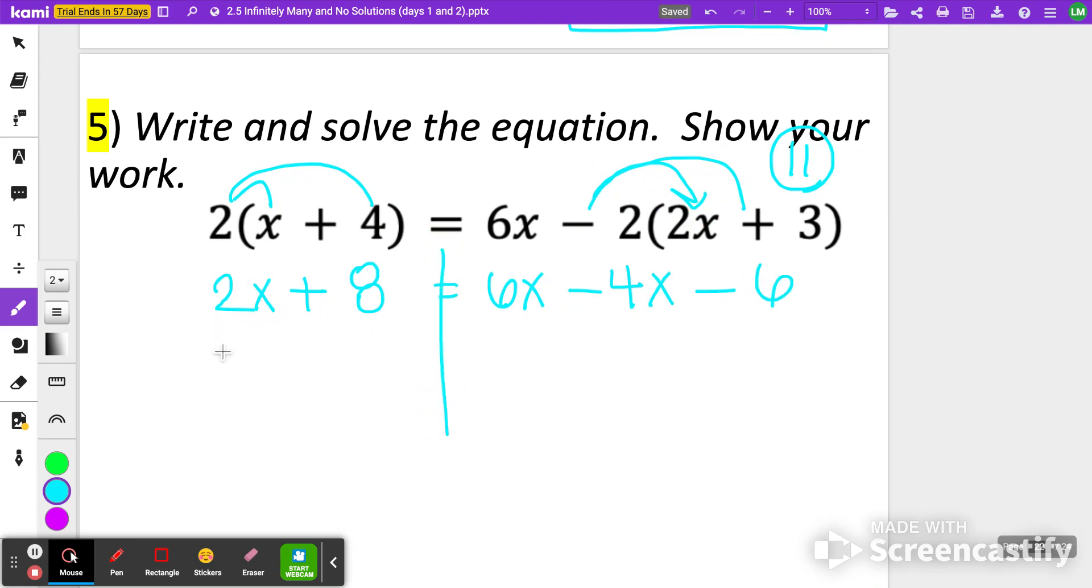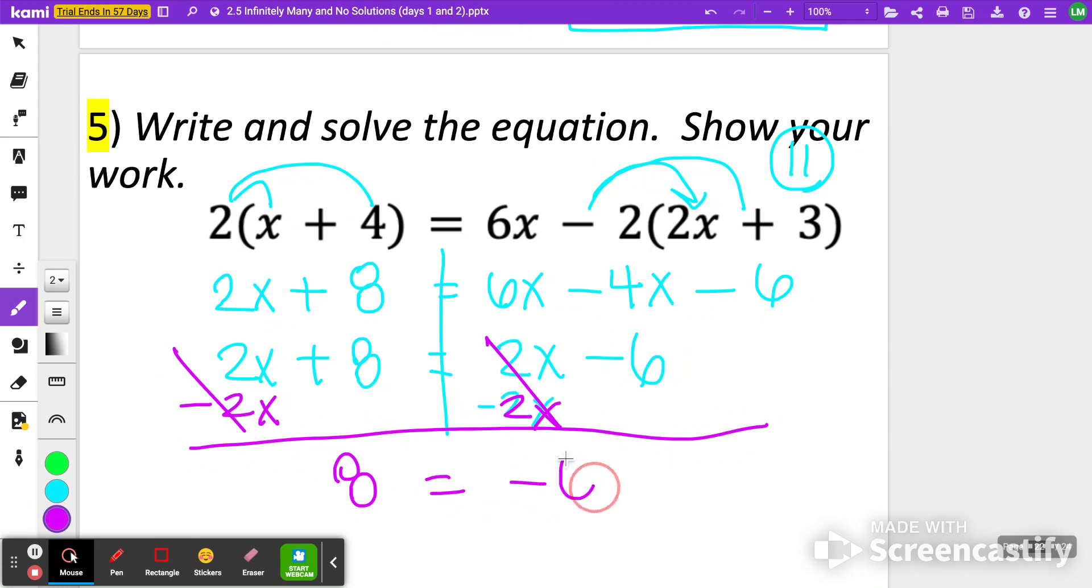Let's go ahead and combine like terms. 2X plus 8 is all good, but over here we can do 6X minus 4X, which is 2X minus 6. Again, we're seeing our constants are not matching, so let's see what happens here. I'm going to subtract 2X from both sides to move my variables over to the left. 2X minus 2X cancels out, so all that's left is 8 equals negative 6. These are not matching, so we have to say no solution.